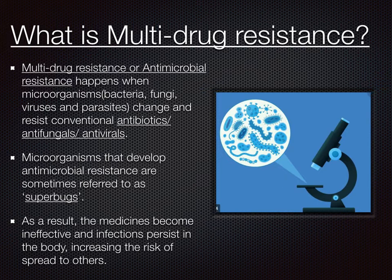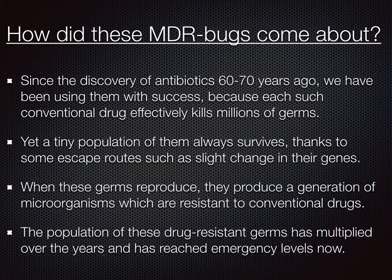Now, where did these super bugs come from? How did these multi-drug resistant bugs come about? Antibiotics were discovered 60 to 70 years ago. The first antibiotic to be discovered was penicillin. Since antibiotics arrived, they revolutionized the field of medicine — previously, even normal infections were not easily treated, but with antibiotics those infections could be treated, because antibiotics kill the microorganisms causing the infection.